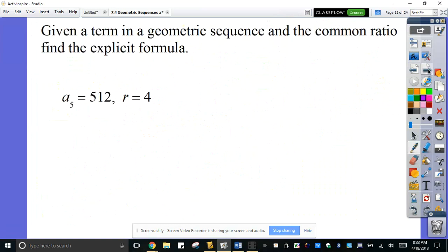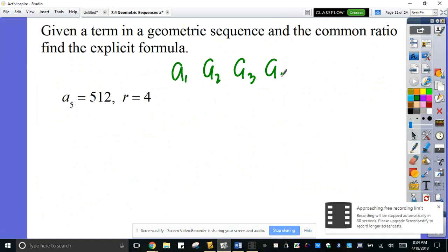Next. So given a term in geometric sequence and the common ratio, find the explicit formula here. All right, this is different. So if you're going to analyze this one, you have a sub 1, a sub 2, a sub 3, a sub 4, a sub 5 is 512. The common ratio here is 4. So how do we do this one here? First, a sub n equals a sub 1 times r to the n minus 1. This is a sub 5. a sub 1 is unknown. Common ratio is 4. And this will be 4 to the 4.